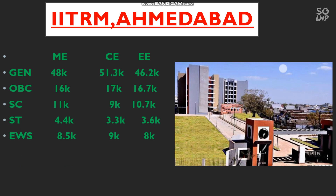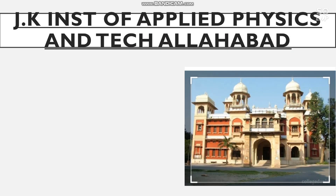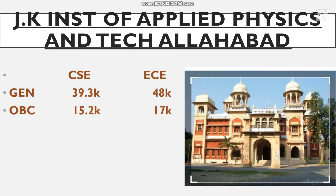As the video progresses, the cutoffs will decrease. Number 8 is JK Institute of Applied Physics and Technology, Allahabad. Cutoff for CS and EC: General — CS 39,000, EC 48,000; OBC — CS 15,200, EC 17,000; SC — 9,400 and 11,500; ST — 4,300 and 6,000; EWS — 7,700 and 8,400.